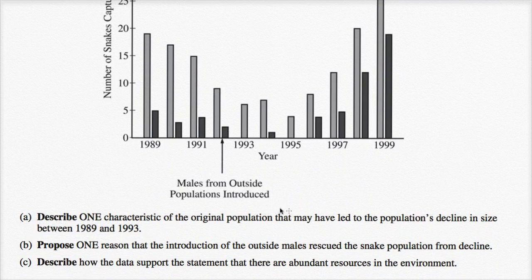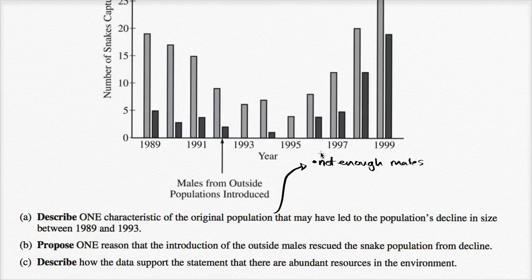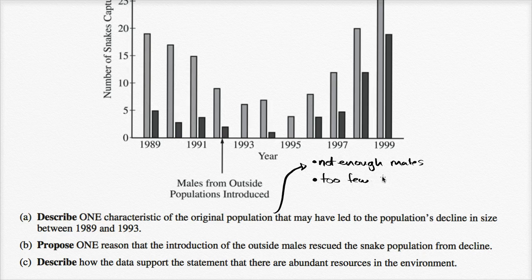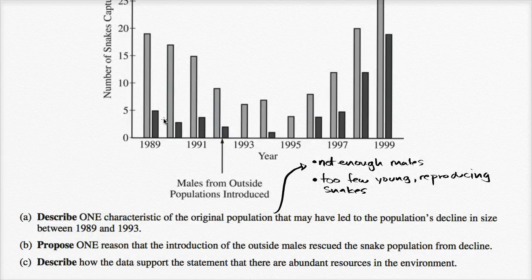For example, you might have an uneven distribution of males and females — not enough males. That's less likely to happen if you have a really large population, but a small isolated population could skew one way or the other. And if you don't have enough males, you're not going to have enough reproduction. You might also have too few young snakes in their prime reproductive age — too few young reproducing snakes. Maybe some calamity in 1988 caused a lot of the young snakes to die, leaving only older snakes that are less viable for reproduction.